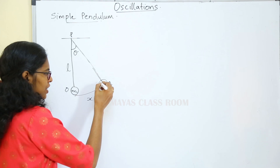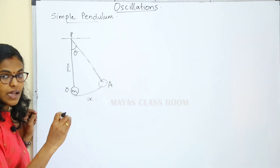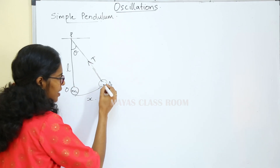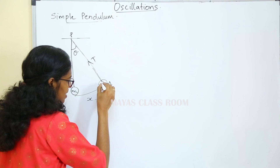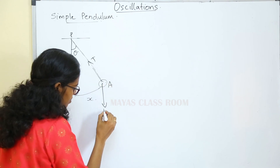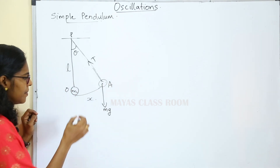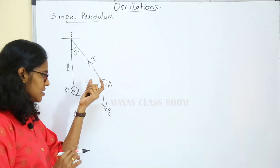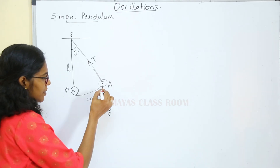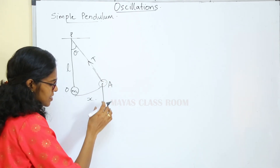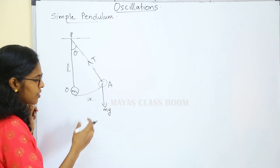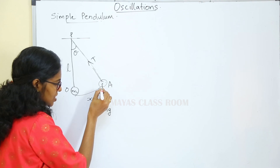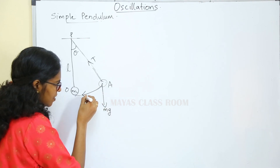If we consider the forces on the bob in this displaced position, we can see the force acting on the bob is the weight, directed downward. The weight has two components: one perpendicular to the string and one along the string. We resolve these into the radial component and the tangential component.